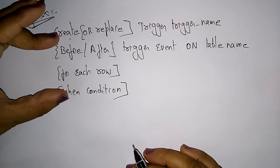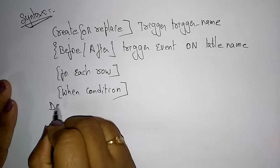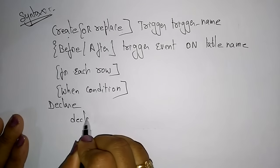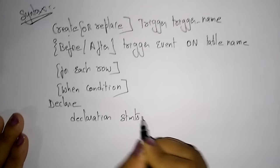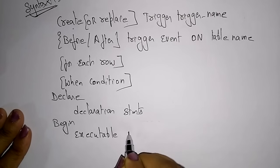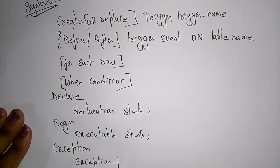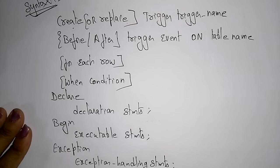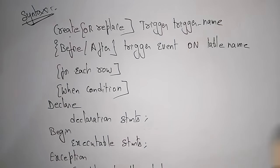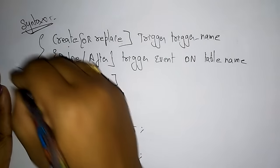So the trigger procedure has the condition and action. Then the PL/SQL program follows: DECLARE — you write the declaration statements here. After that BEGIN — you write the executable statements. If any exceptions occur, you write the exception handling block. Then END. Everything is just like PL/SQL: DECLARE, BEGIN, EXCEPTION, END — this is common for all PL/SQL. The only addition is you include the trigger procedure at the start.